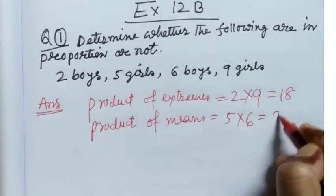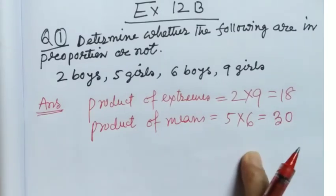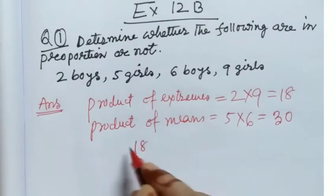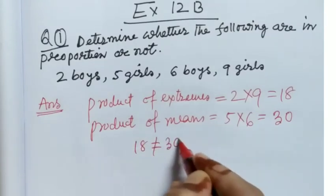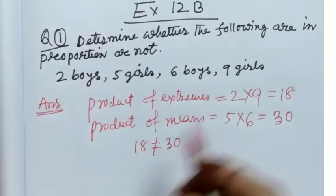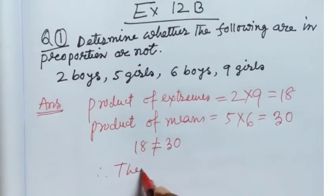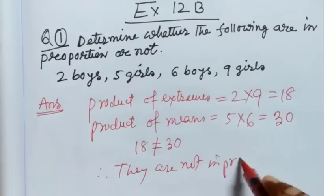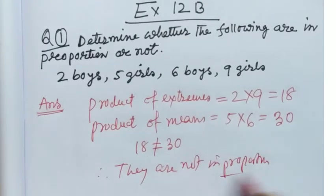5 into 6 is equal to 30. Now you see, what have we found? Since 18 is not equal to 30, therefore product of extremes is not equal to product of means. That means they are not in proportion. Not in proportion.